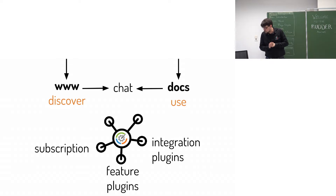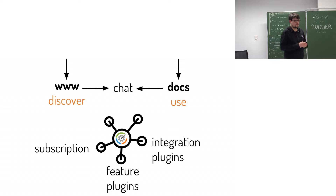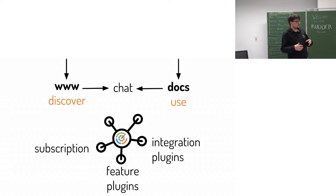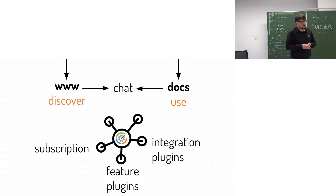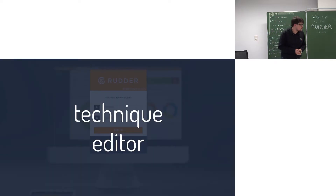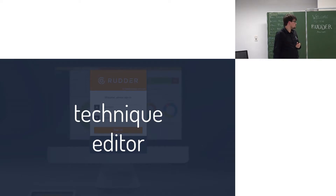To sum up what we did this year: we created two main entry points for Rudder users. Previously we had many different websites and sources of documentation; now if you want to learn about Rudder, go to www.rudder.io, and for using Rudder it's docs.rudder.io. The chat is what makes the link between the developer team and the community. Rudder has moved from being mostly a monolith to a platform that can be extended using plugins and integrations.